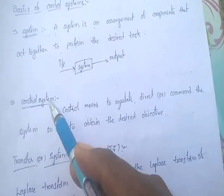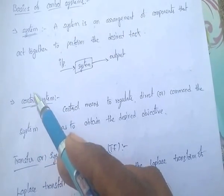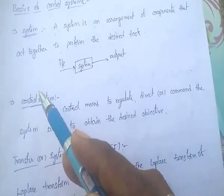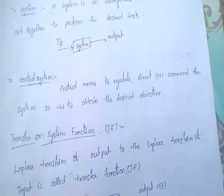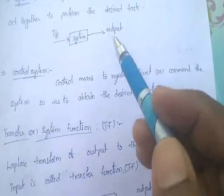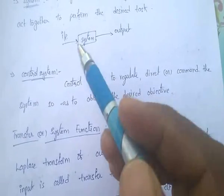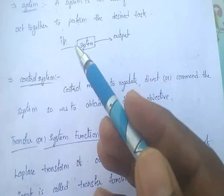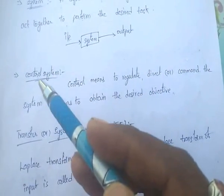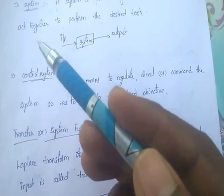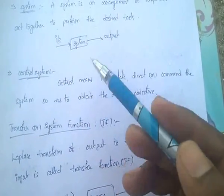What is a control system? What does control mean? Control means to regulate, or direct, or command the system, so as to obtain the desired objective.